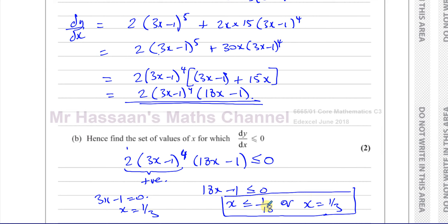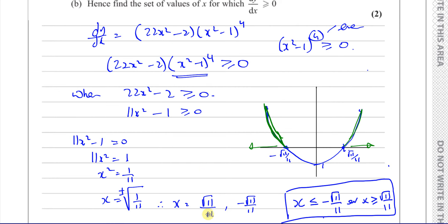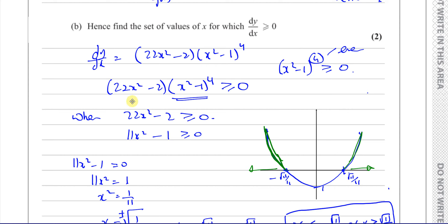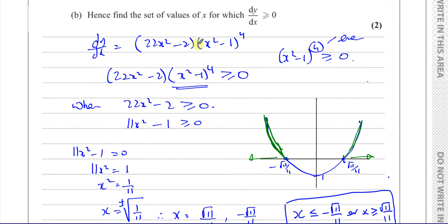These are the two cases in which the expression will be less than or equal to 0. If it said just less than 0, then the answer would just be x ≤ 1/18. But because it says less than or equal to 0, x equals 1/3 has to be included as well. This brings me to a point of doubt about a question I answered recently from a very old paper — I've actually written to the examining board to check their mark scheme. The question from the June 2017 C3 paper asks: hence find the set of values of x for which dy/dx is greater than or equal to 0.